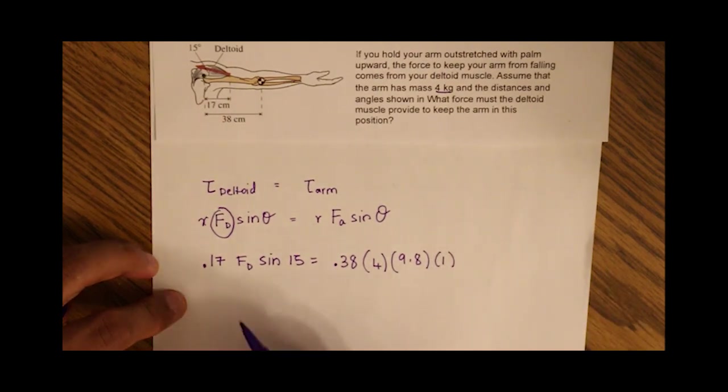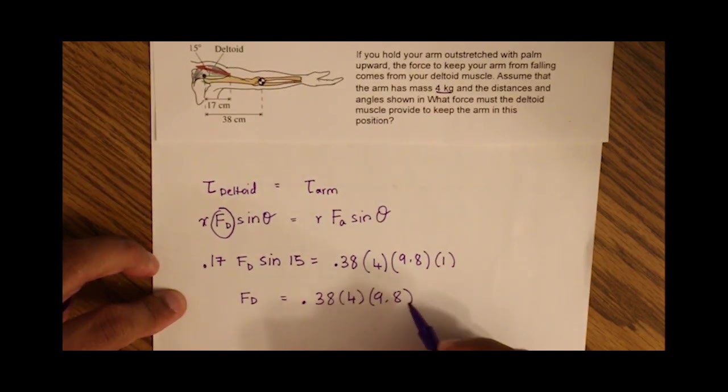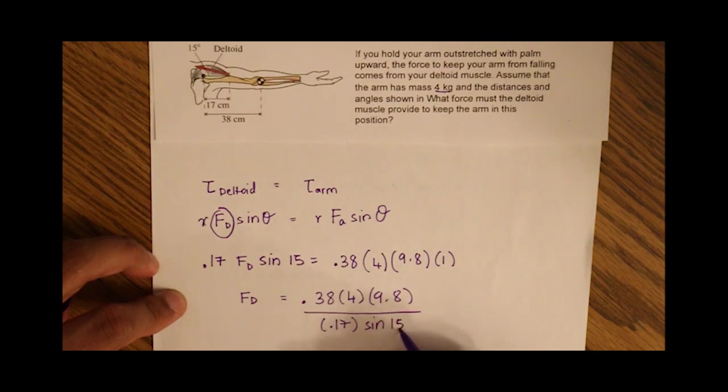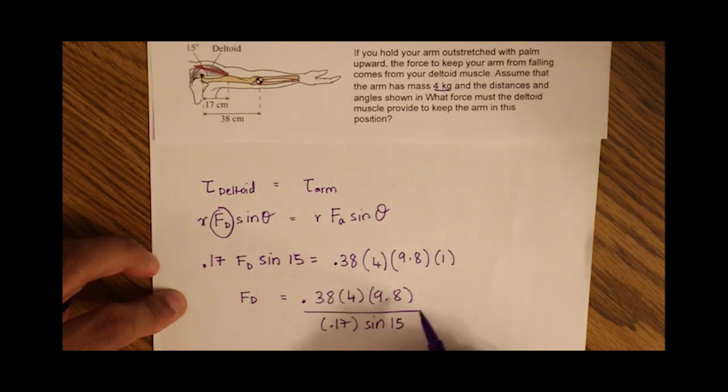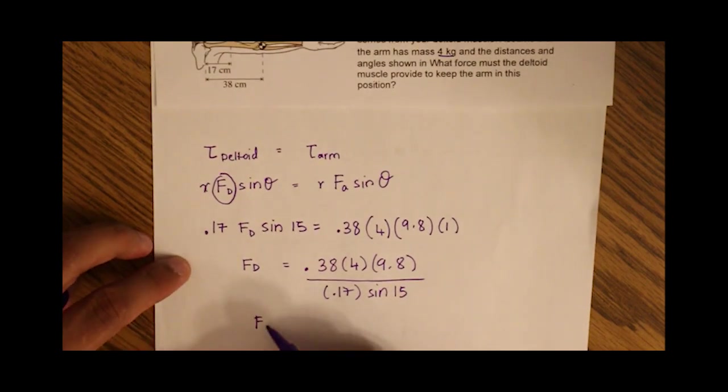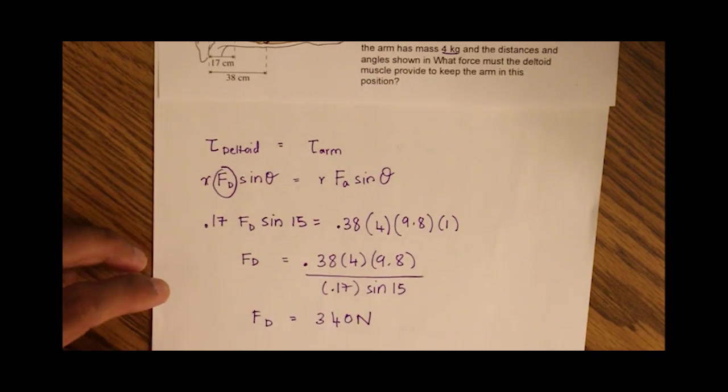Now we can solve algebraically for the force of the deltoid muscle as 0.38 times 4 times 9.8, divided by 0.17 and sine of 15. This gives us a force of the deltoid muscle as 340 newtons. Thank you.